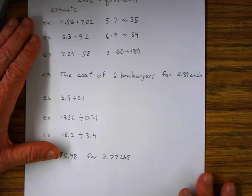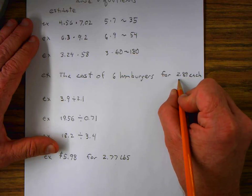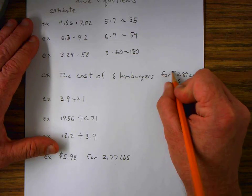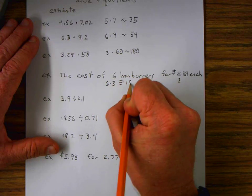In this next problem, we're looking at the cost of 6 hamburgers for $2.89. Well, $2.89 could be rounded up to about 3 bucks per hamburger. So we have 6 times 3 is approximately equal to 18 dollars.